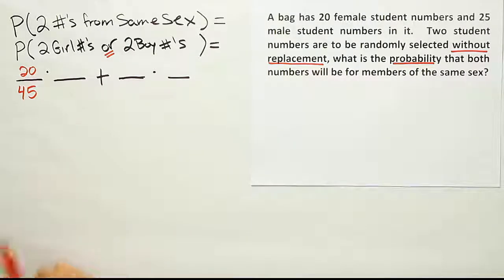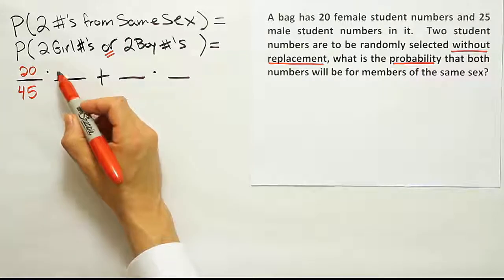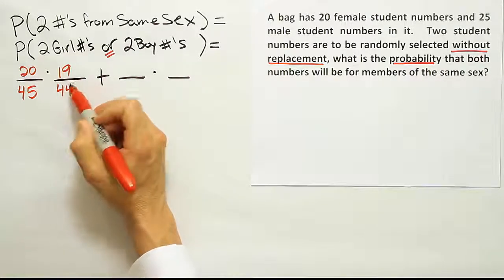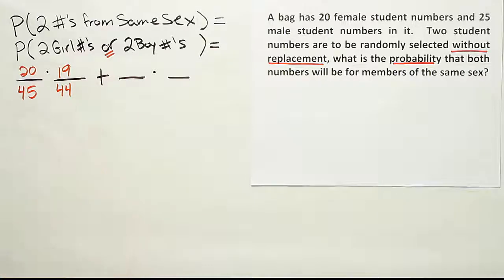Then I'm going to go back in and I'm going to assume that that first number I took out was for a girl. And I go back in and I'm going to try to get another girl number and I'm going to assume that there will only be 19 girl numbers left out of 44 total numbers, right? So that's the probability that I get two girl numbers.